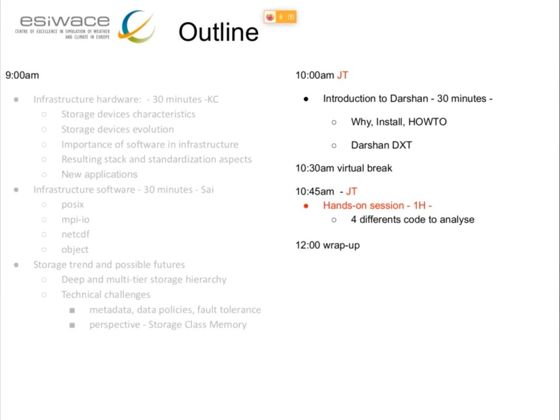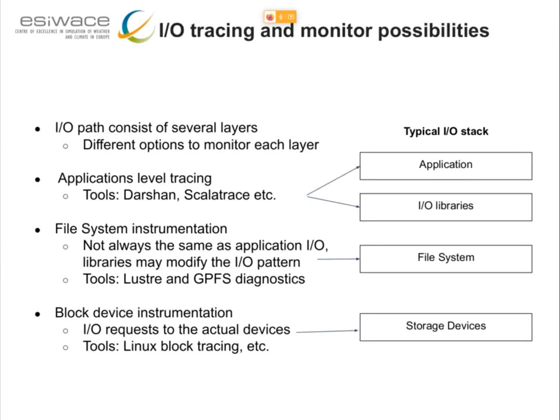Let's talk a bit about Darshan. Darshan is an IO profiler — the idea is that this tool will allow the application developer, or at least the application user, to know what is the cost of the IO and where the time is spent in terms of IO. I'm not a Darshan developer or linked to the Darshan team by any means; it's just that I've used this tool and I think it's pretty cool. There are other tools around in the community, but I found this one convenient.